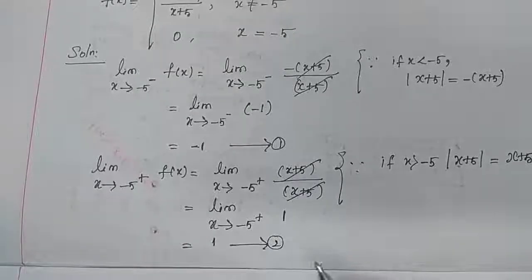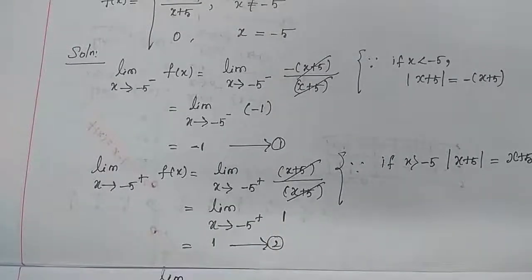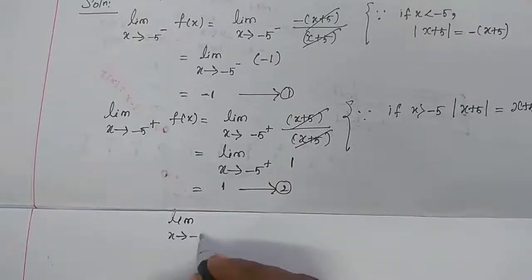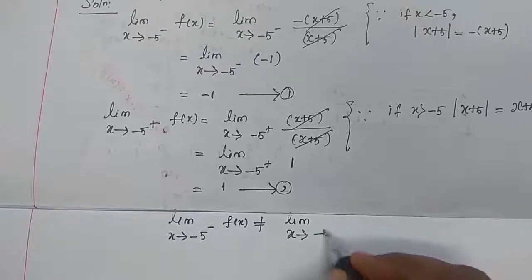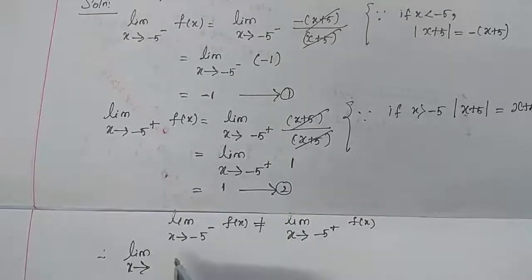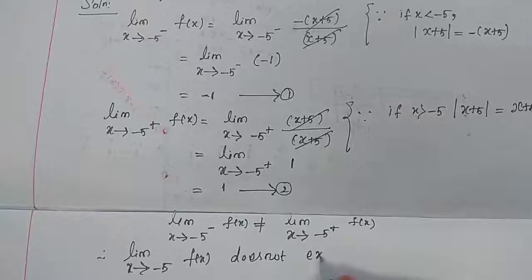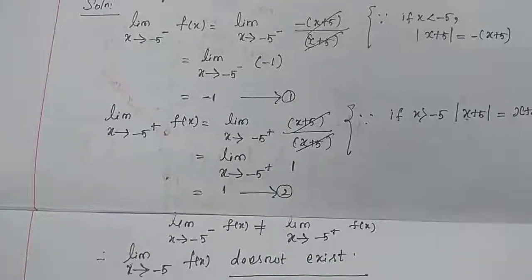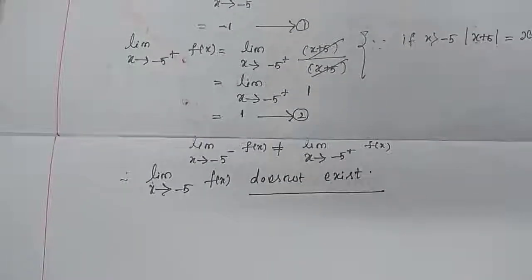From equations 1 and 2, the left limit (−1) is not equal to the right limit (+1). Therefore we conclude that the left limit is not equal to the right limit, so lim (x→−5) f(x) does not exist. Example 9.5 is complete.